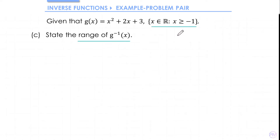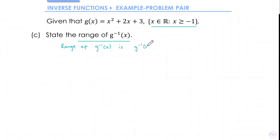So we can simply write down the range of g⁻¹ is g⁻¹(x) ≥ -1.